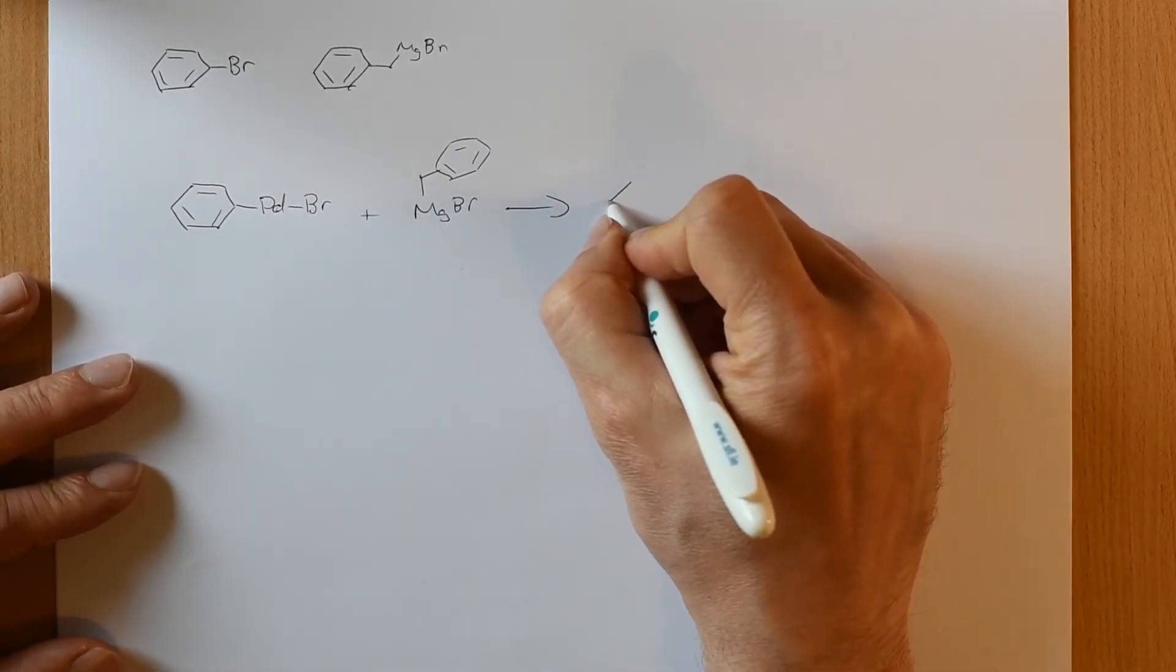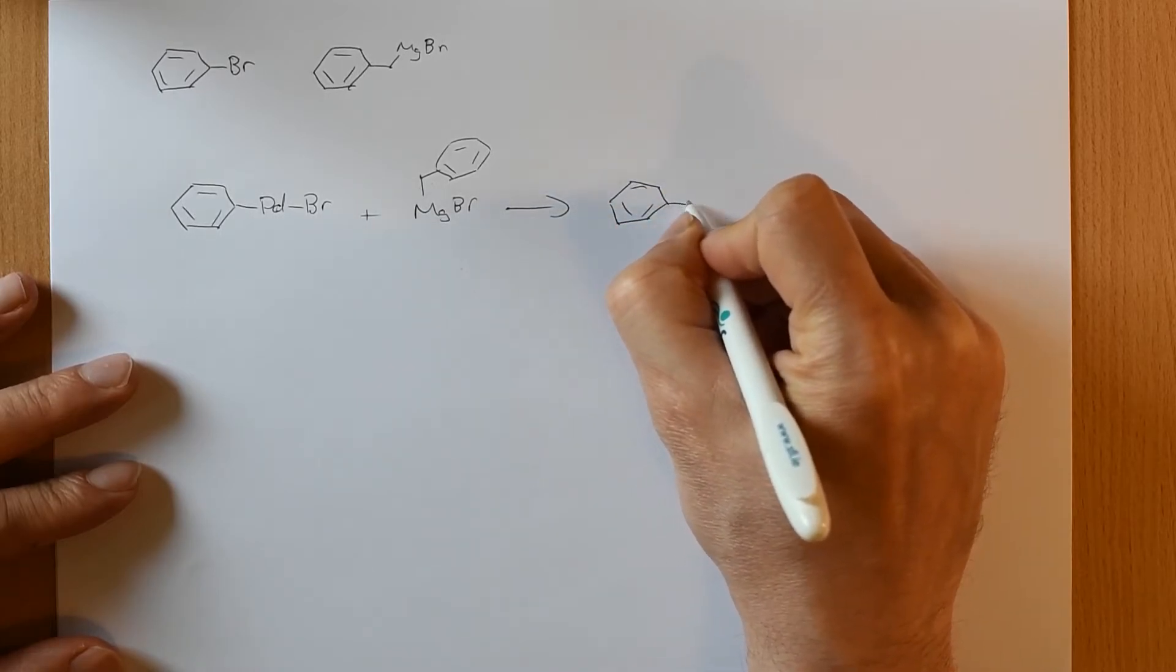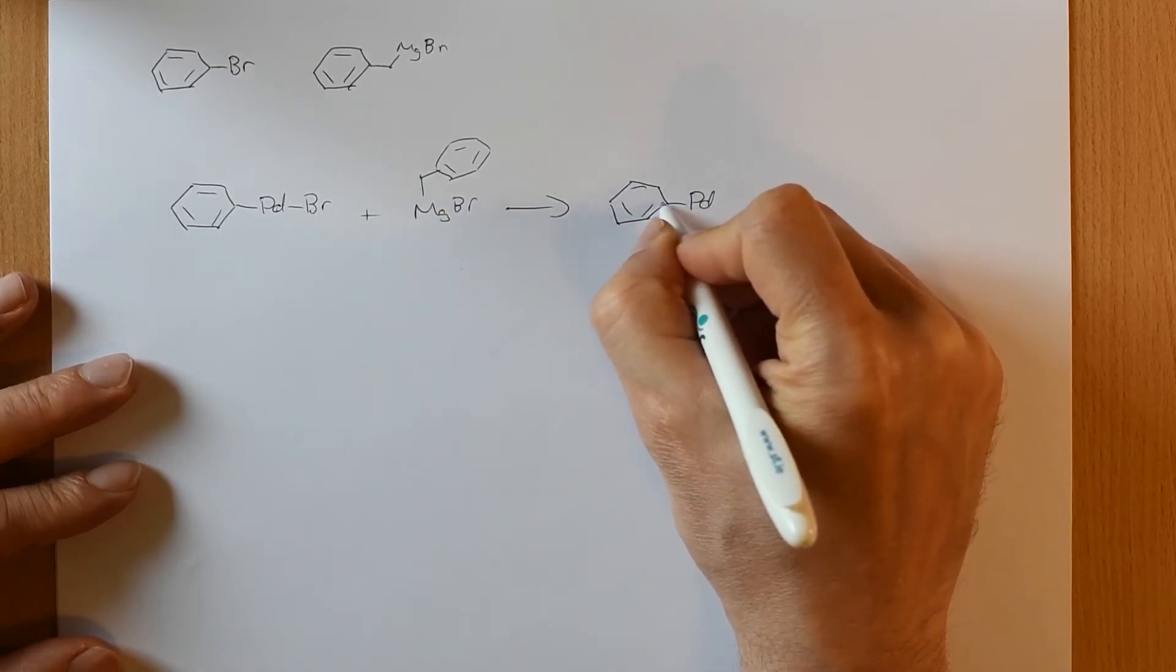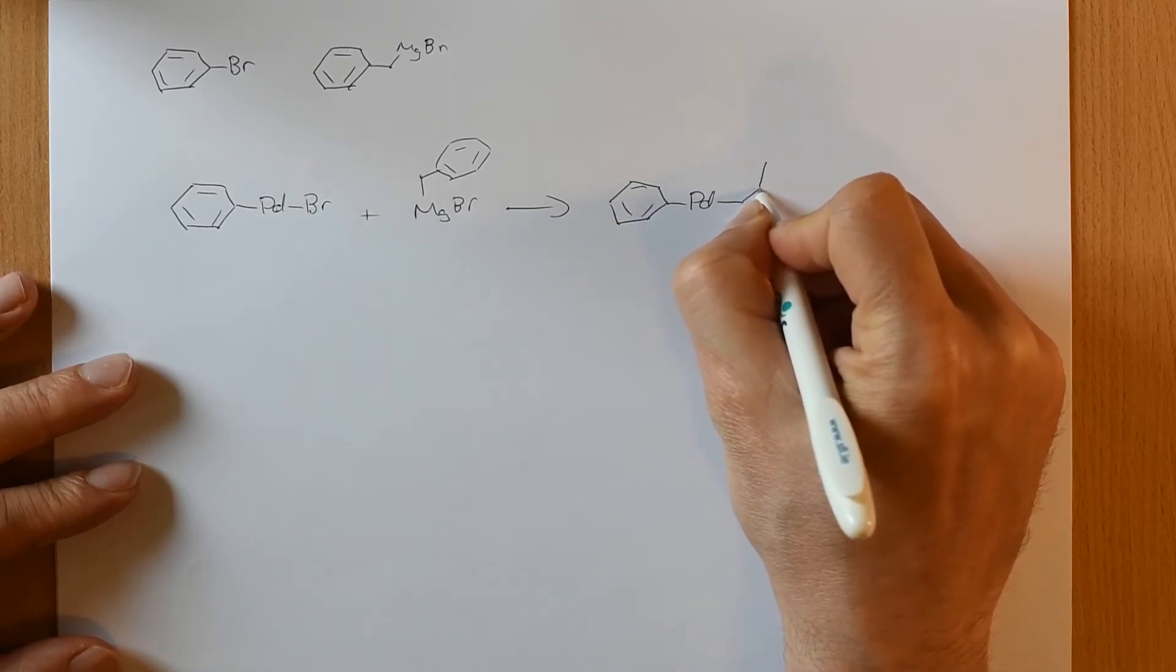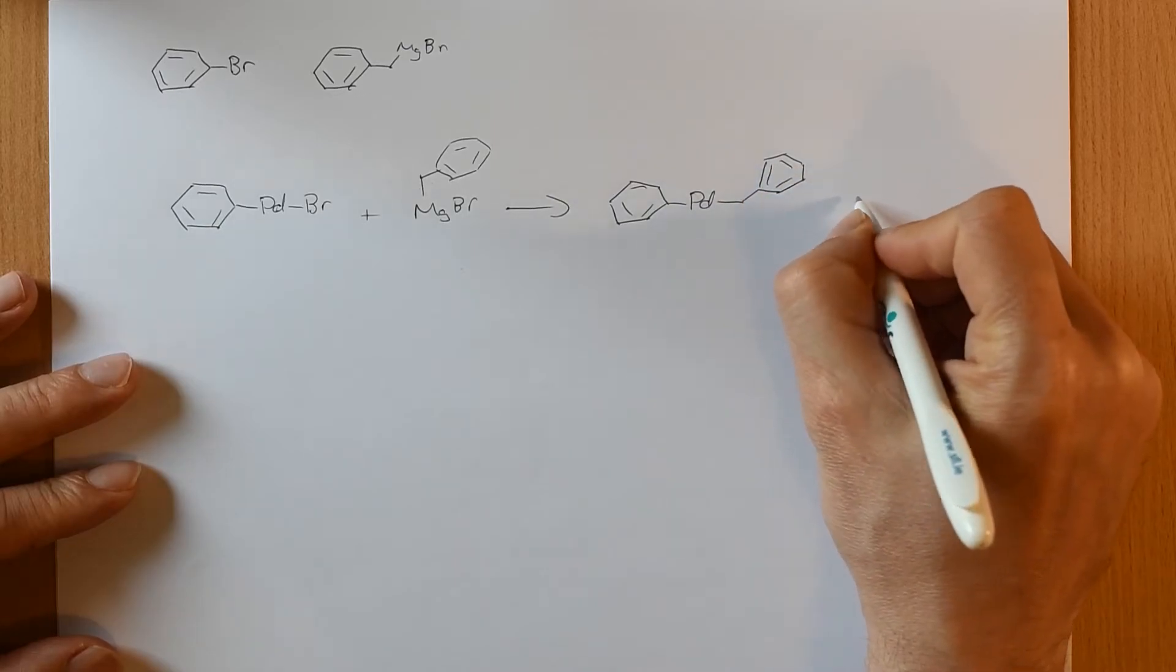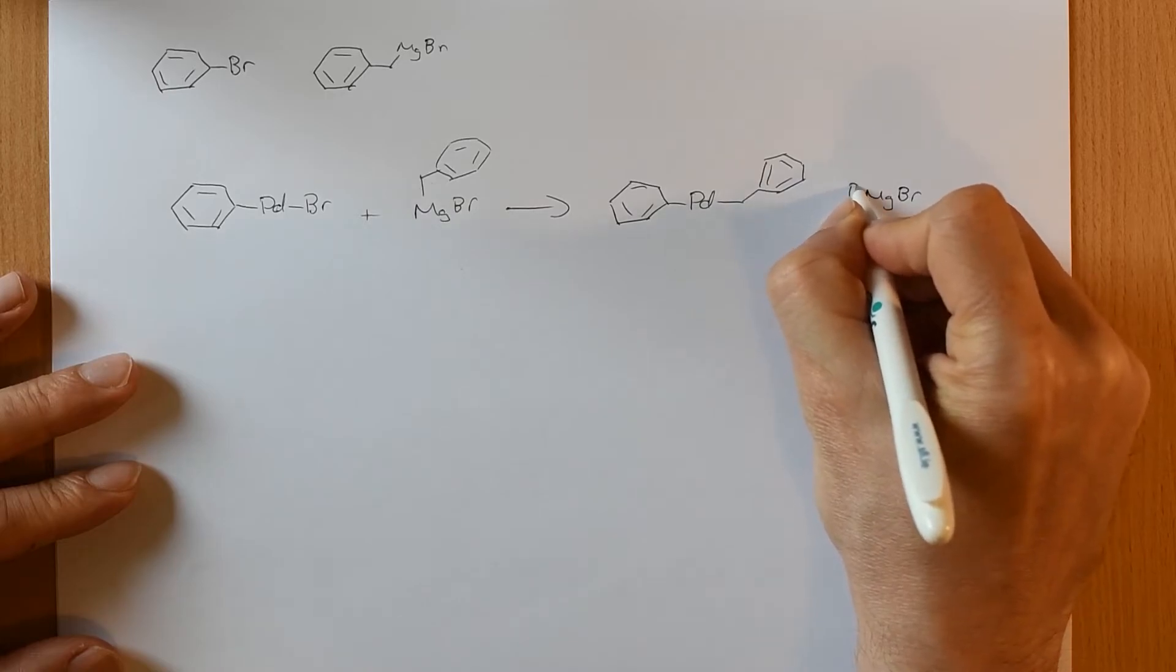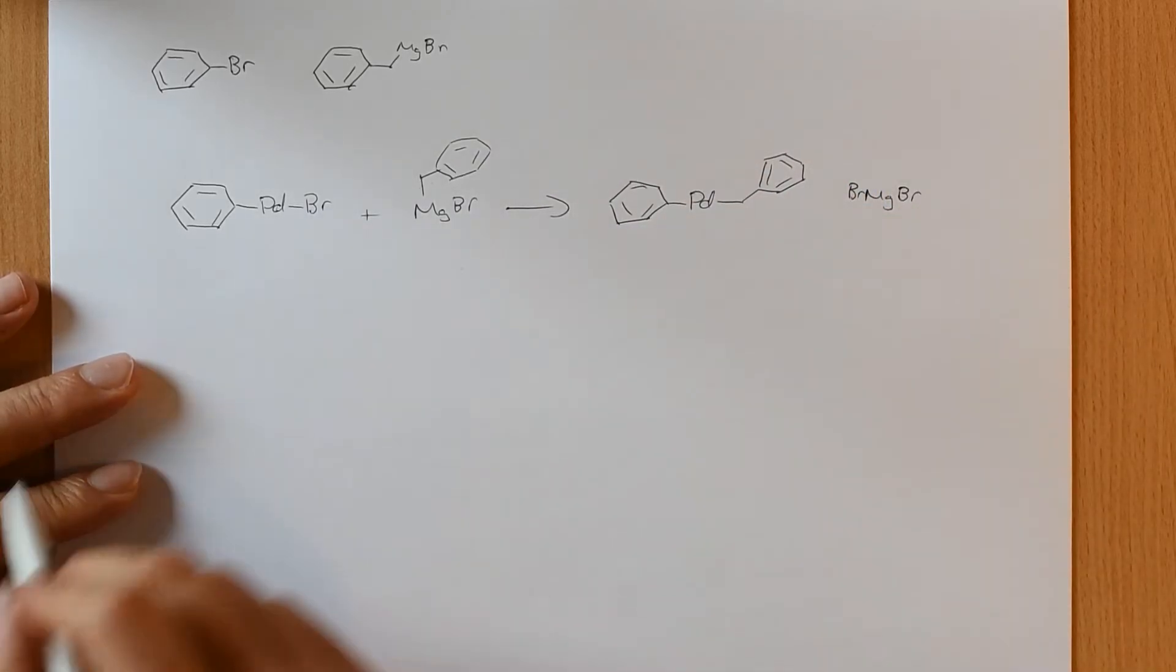And that is because it's energetically favorable to do that. Magnesium-bromine or magnesium-bromide ionic bonds are more energetically favorable than magnesium-carbon bonds. And the carbon-palladium bonds are more favorable. So that reaction is going to proceed. And you can see in our products, we now have a palladium with the two carbon bonds attached to it. And we have the magnesium that has taken the bromide. So the bromide and the benzyl have exchanged places. So that's transmetallation.